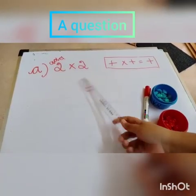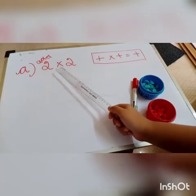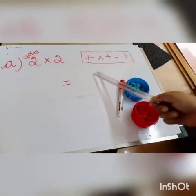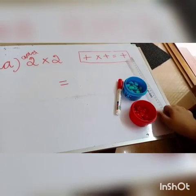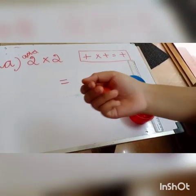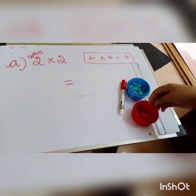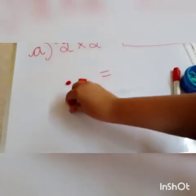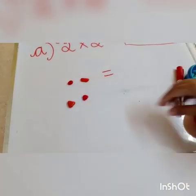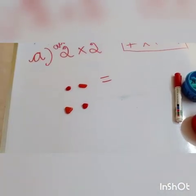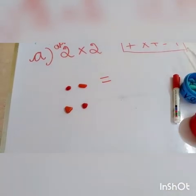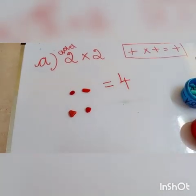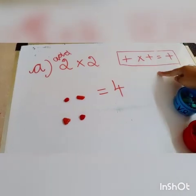2 into 2. That is 2 times 2 — add 2 groups of positive 2. For this sum, we are going to apply this formula: plus into plus is equal to plus. For this, I am going to take red stones for positive integers. We are going to place the first group and the second group — 2 groups of 2. When we add this, we will get the answer positive 4.